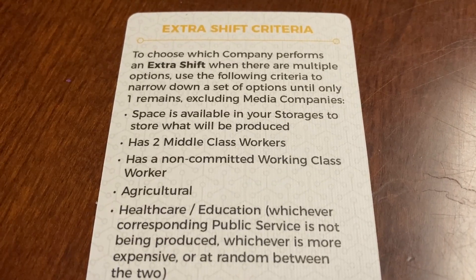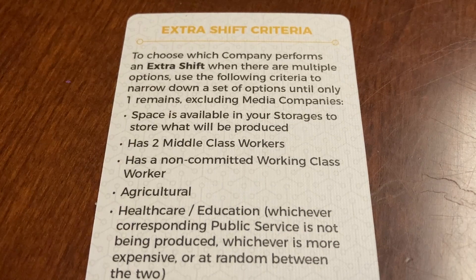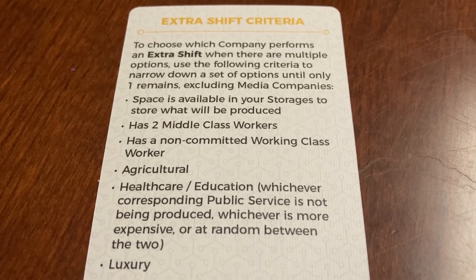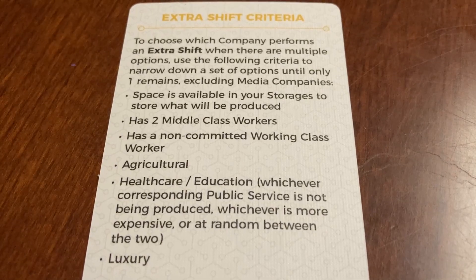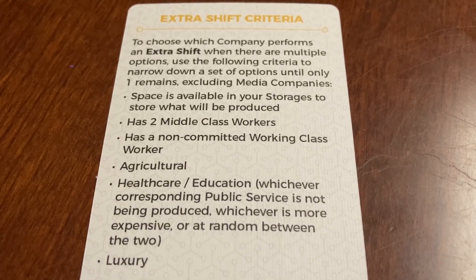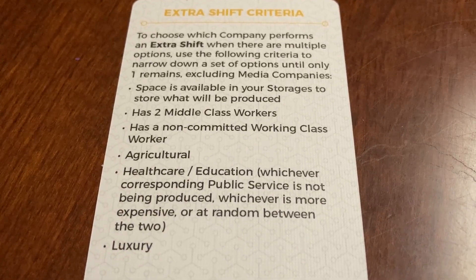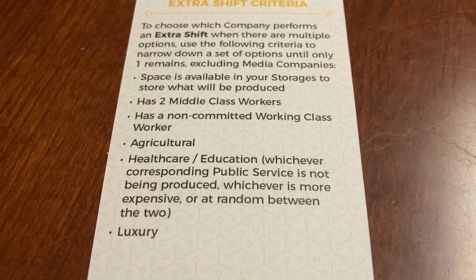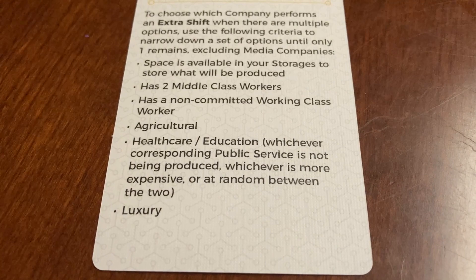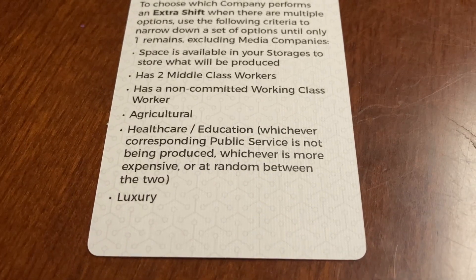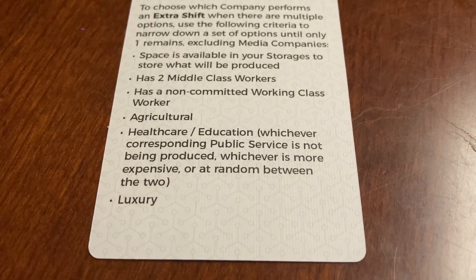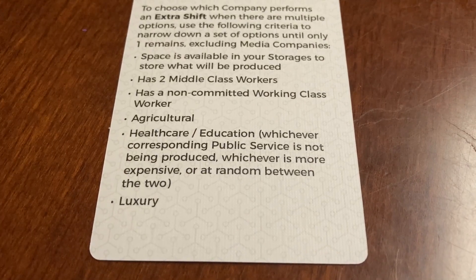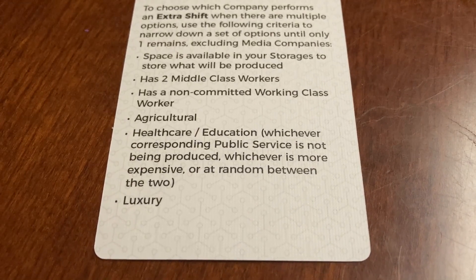Finally, the action unique to the middle class is the extra shift. Note that you're excluding media companies. Prioritize the following: first, space is available in your storage to store what is produced; second, you have two middle class workers; third, you have a non-committed working class worker; fourth, agricultural company; fifth, healthcare or education company — prioritizing whichever one is not being produced, then whichever is more expensive, or random between the two; and then finally luxury.